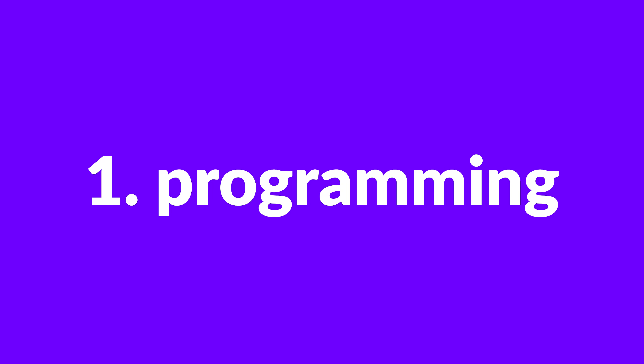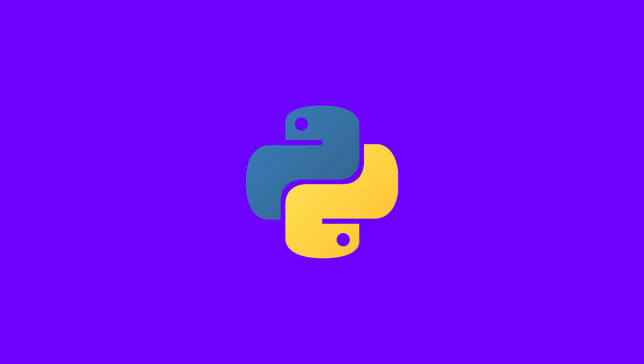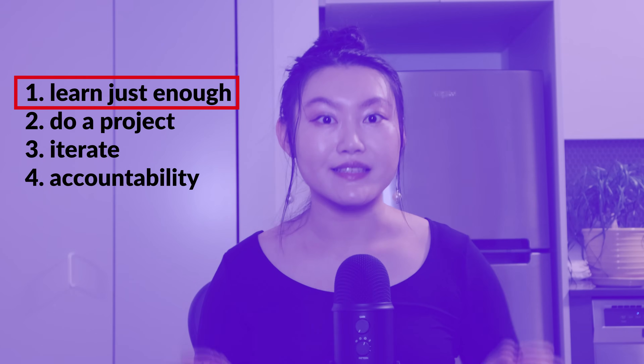I recommend starting off with programming — Python — because it's the most intuitive, multifunctional, and has the best packages for machine learning. Programming is the most important thing to learn because it gives you the toolkit to do anything. In general Python, that's variable declaration, loops, and what OOP is. For data science specifically, you should also learn two packages: numpy and pandas. I would just understand how numpy works and then focus on pandas, since numpy is the basis for pandas.